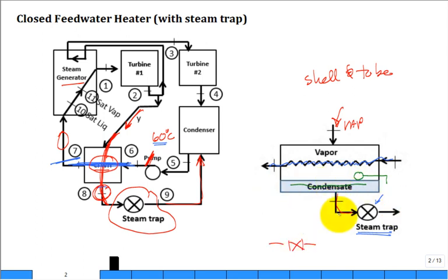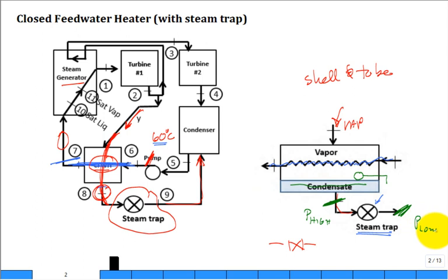Regarding pressure across the steam trap: it's just like a restriction — high pressure on one side, low pressure on the other. It drops the pressure. The cold fluid in the tubes is heated by the condensing steam on the outside, and comes out warmer at state 7.